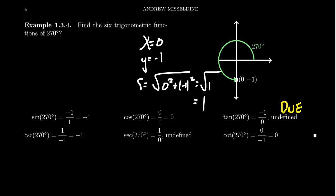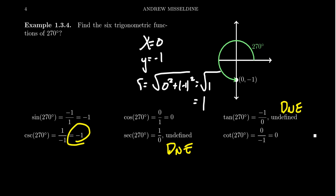Similarly, secant of 270 degrees is r over x, which again gives 0 in the denominator — so secant is also undefined at 270 degrees. Tangent and secant are likewise undefined at 90 degrees. Cosecant of 270 is r over y, which is 1 over -1 = -1. Notice that sine and cosecant are actually equal to each other at 270 degrees — they'll also agree at 90 degrees. Cotangent of 270 is x over y, which equals 0. In this case, cosine and cotangent are also equal to each other at 270 degrees, which will also be the case at 90 degrees. The viewer should also consider the special cases of 0 degrees and 180 degrees.